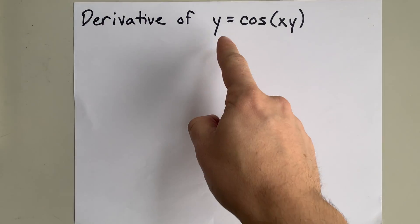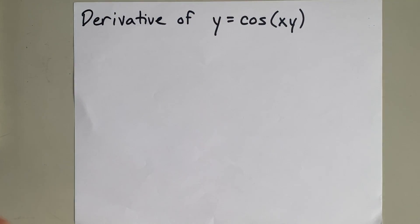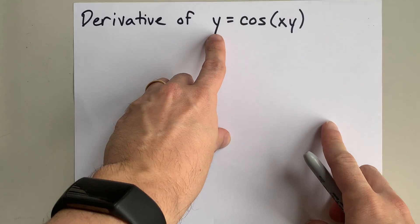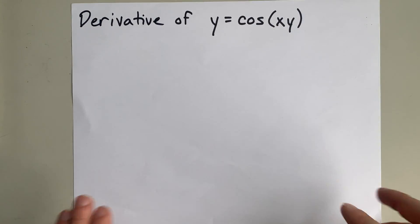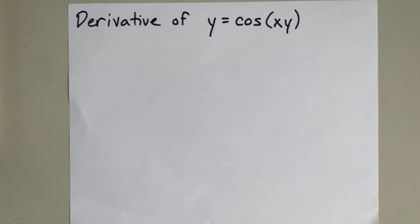We're going to take the derivative of y equals cos xy. Because we have a y on the left side of the equation and also inside a trig function on the right, we're going to need implicit differentiation.